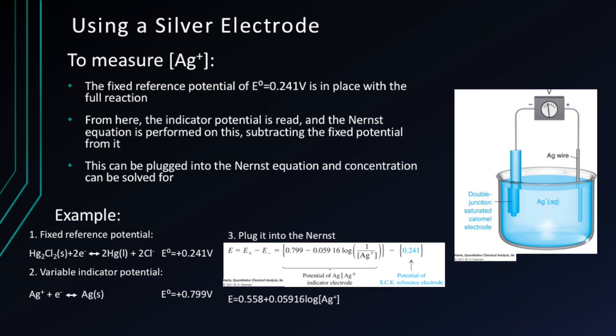For measuring the concentration of silver+, the fixed reference potential of 0.241 volts is used with the full cell reaction. The indicator potential is read, and the Nernst equation is applied by subtracting the fixed potential from it. This can then be plugged into the Nernst equation and the concentration can be solved for. An example is listed below for practice.